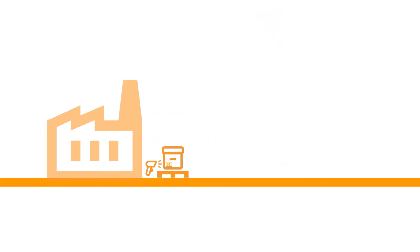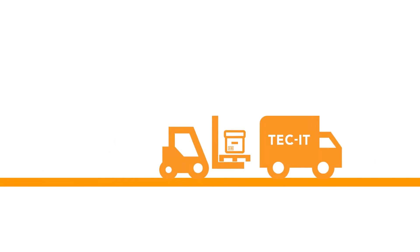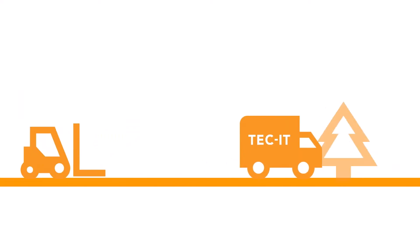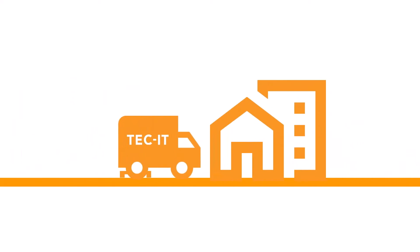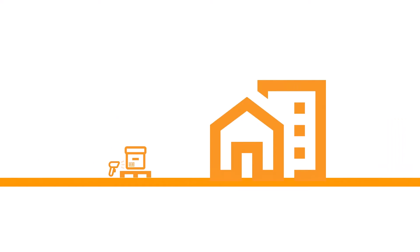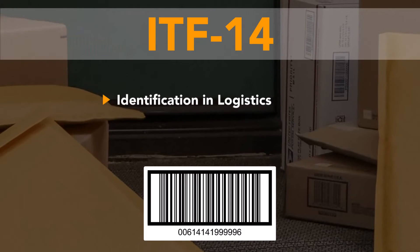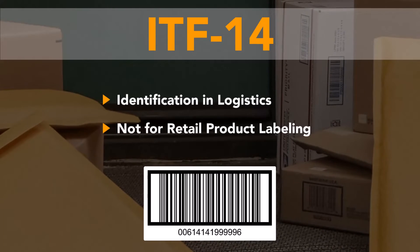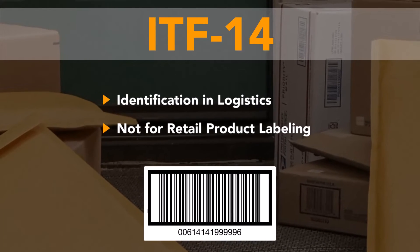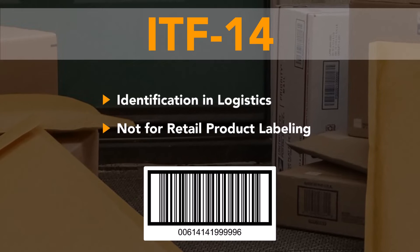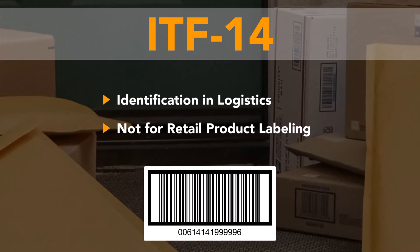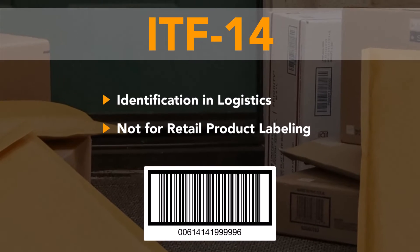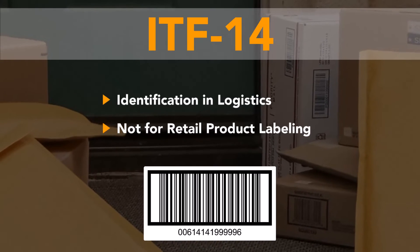The focus of the remaining barcode types is on supply chain management and logistics applications. ITF-14 barcodes are used in logistics and transportation applications to label trading units or outer packaging, such as boxes.